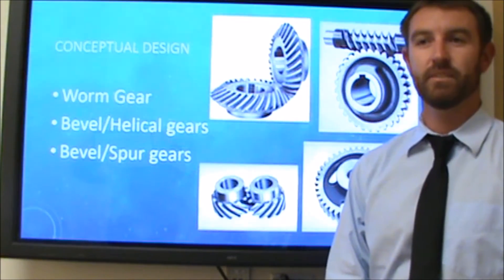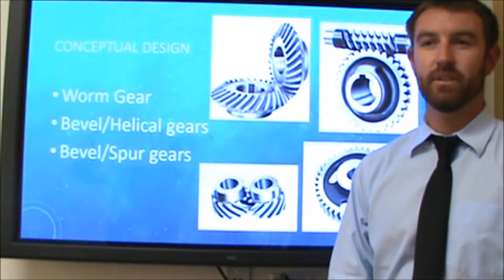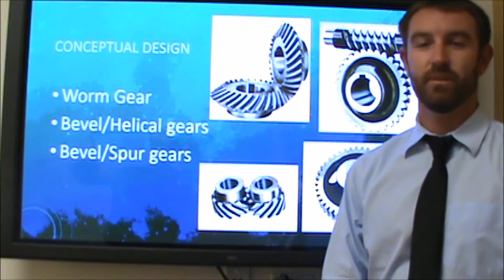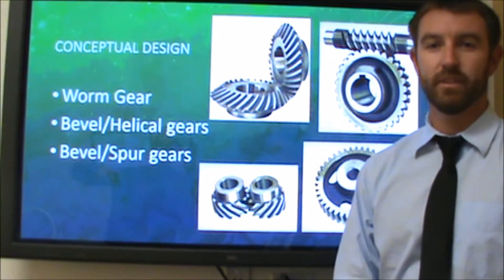The bevel and helical combination as well as the bevel and spur gear sets are similar in size, but the helical gears require two smaller sets of gears compared to one set for the spur gears.